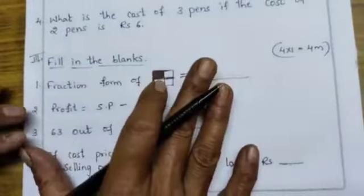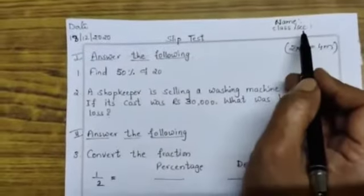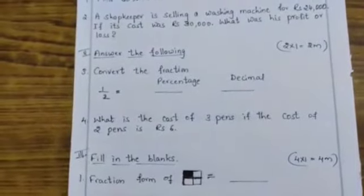I hope you understood, children. You have to write this in A4 size paper neatly. Don't forget, write the name, class and section. Okay? All the best. We will meet in next class.